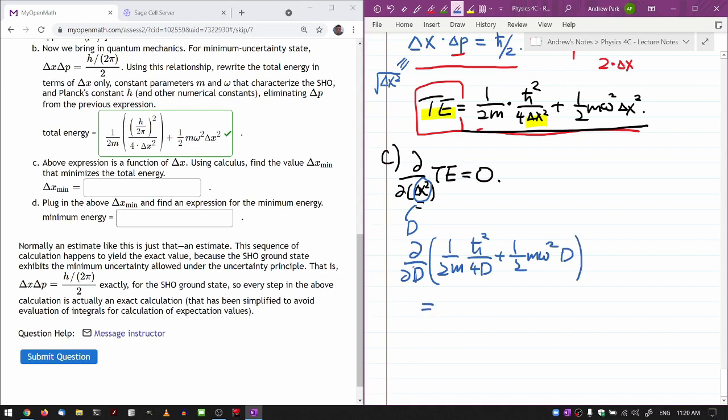So I'm taking the derivative with respect to capital D of one half m h bar squared over 4D plus one half m omega squared D. I think that calculation will still lead me to the same final result. So the first term, I get minus h bar squared over 2 times 4, 8. And then I got this minus from D to the minus 1, bringing the exponent down as coefficient. And then the new exponent is D to the minus 1 minus 1. So it's minus 2 here, plus one half m omega squared. And D just goes away. That's kind of why I wanted to do it this way.